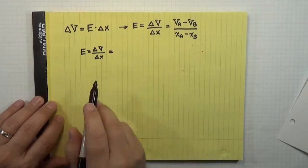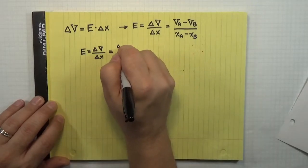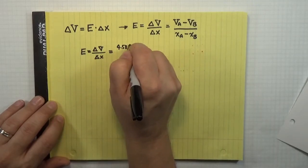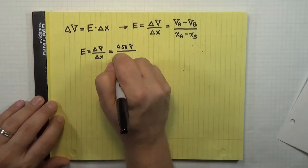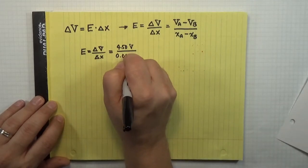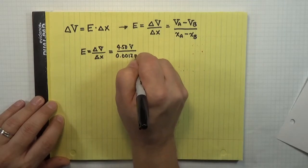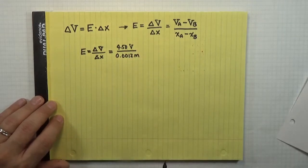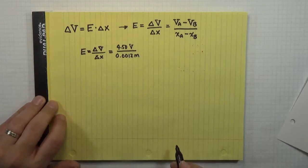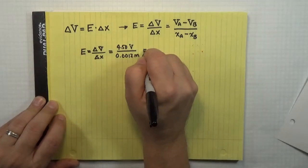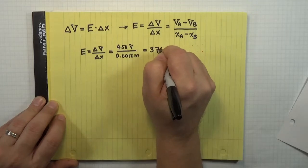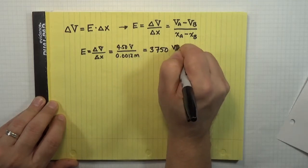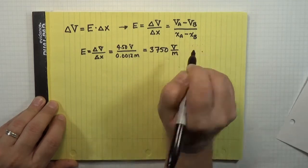And in this case, delta V between A and B is 4.50 volts. And the displacement between those two points is 0.0012 meters. Be careful to always convert to SI units, so you get SI results. And so the answer to that, if you punch it out, is 3,750 volts per meter.